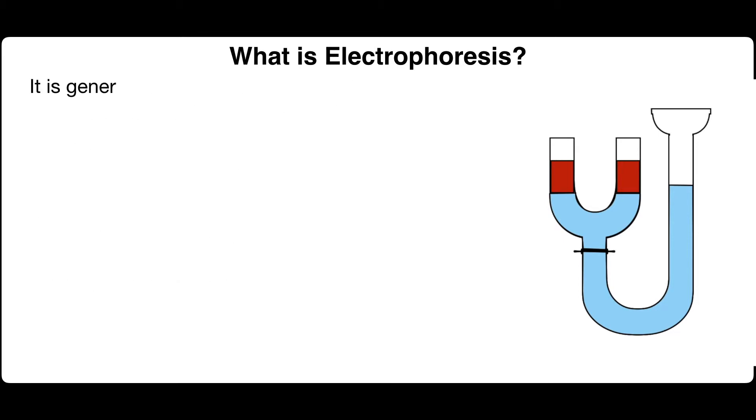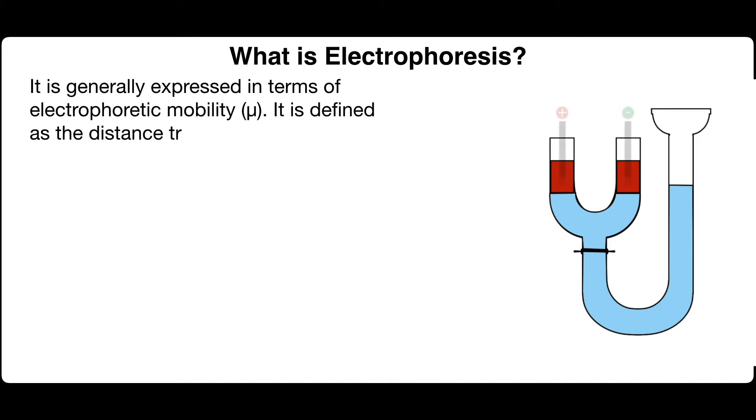It is generally expressed in terms of electrophoretic mobility mu. It is defined as the distance traveled by the particle in 1 second under a potential gradient of 1 volt per centimeter.